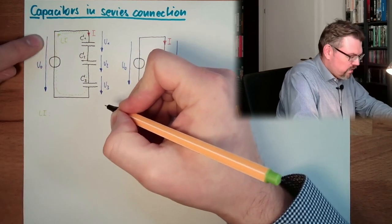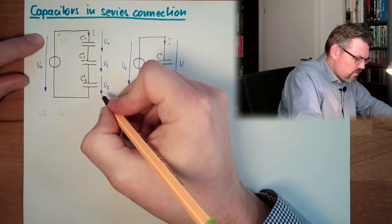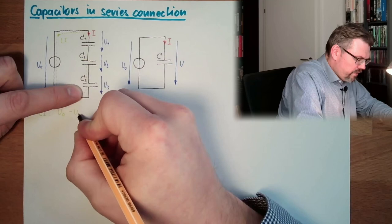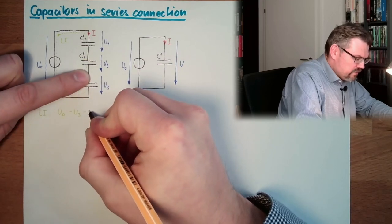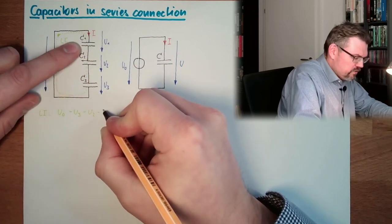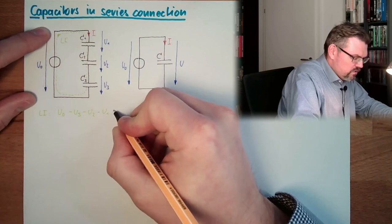Let's see, loop 1, U0, minus U3, minus U2, minus U1, is zero volts.